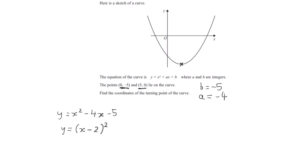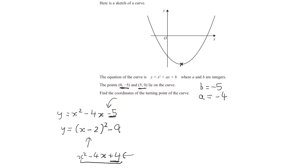If we expand (x − 2) squared, we get x squared minus 4x plus 4. What we have is x squared minus 4x plus 4, but what we want is x squared minus 4x minus 5. The only difference is here we have +4 but we want −5. So we need to take away 9, because 4 take away 9 is −5. So if we take away 9, we have the completed square form: (x − 2)² − 9.